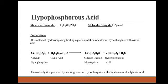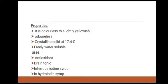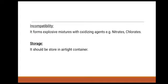Alternatively, hypophosphorus acid is prepared by reacting calcium hypophosphate with a slight excess of sulfuric acid. Properties: it is colorless to slightly yellowish, odorless, crystalline solid at 17.4°C, freely soluble in water. Uses: it is used as an antioxidant, as a brain tonic, in ferrous iodide syrup, and in hydroiodic acid syrup. Incompatibility: it forms explosive mixtures with oxidizing agents such as nitrates and chlorates. Storage: it should be stored in an airtight container.